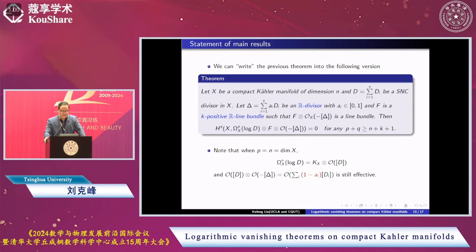So in particular, when P equals n equals dimension X, omega^n(log D) equals K_X tensor O(D), where O(D) is the corresponding line bundle to divisor D. In that case, O(D) tensor O(-delta) equals O(summation(1-a_i)D_i), still effective.